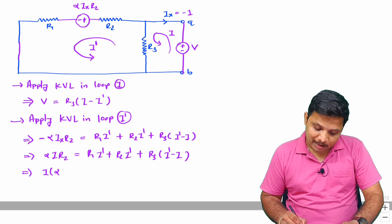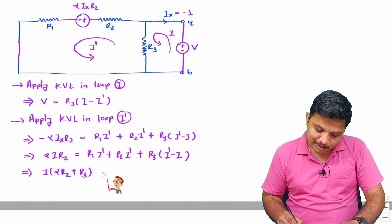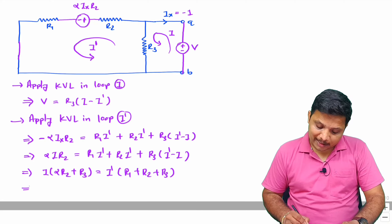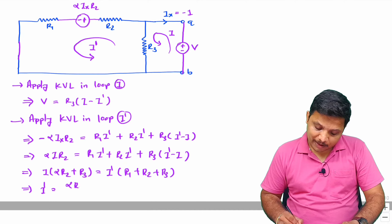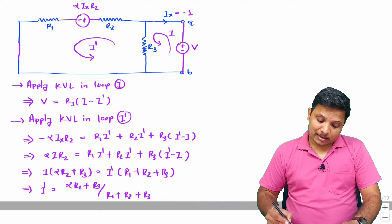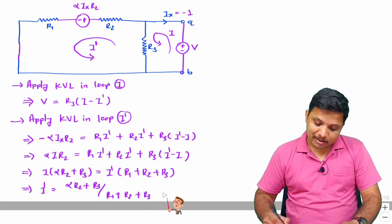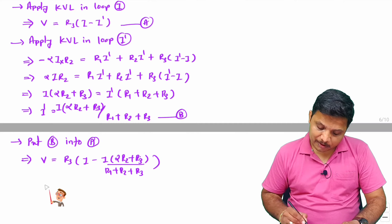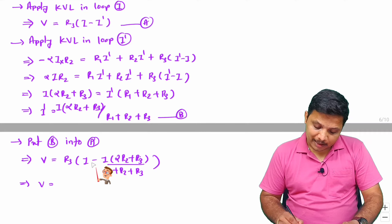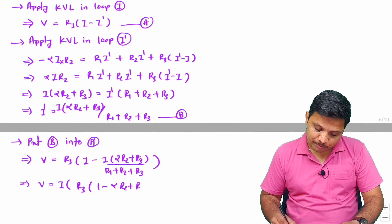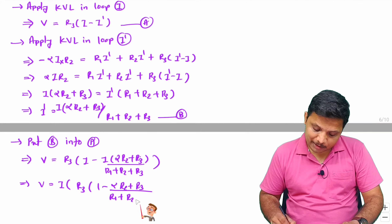Taking the I terms to one side: I·(alpha·R2 + R3) = I'·(R1 + R2 + R3). Therefore I' = I · (alpha·R2 + R3) / (R1 + R2 + R3). Substituting this value of I' back into the first loop equation: V = R3·(I − I) · (alpha·R2 + R3) / (R1 + R2 + R3).